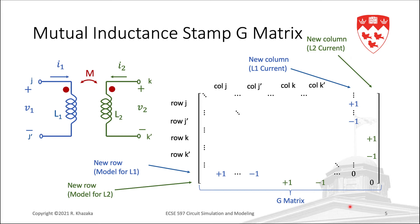Also, it is implied that we will have two new variables in the vector of unknowns X, which are of course the currents I1 and I2 in the inductors. So when we have a plus 1 and minus 1 in row J and row J', for example, we simply are adding the inductor current I1 in the KCL equation at node J and subtracting it at node J'. So far, we have two regular inductor stamps, and we have not seen the impact of the mutual inductance.